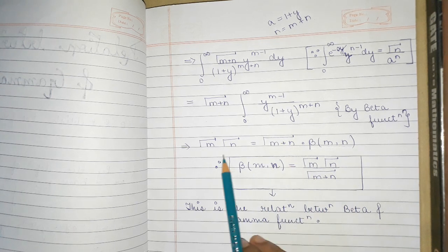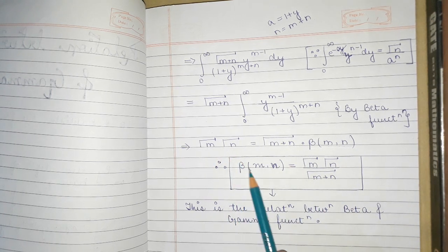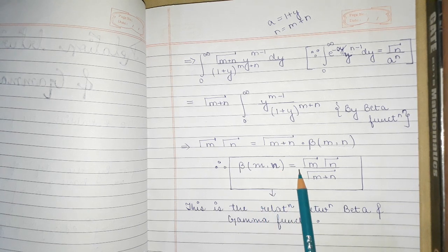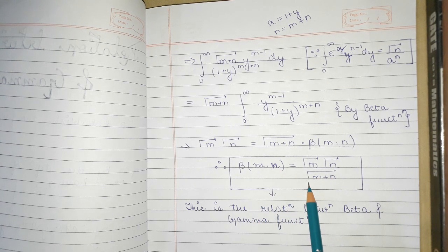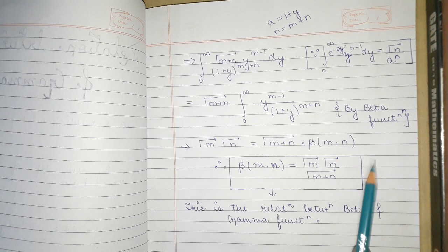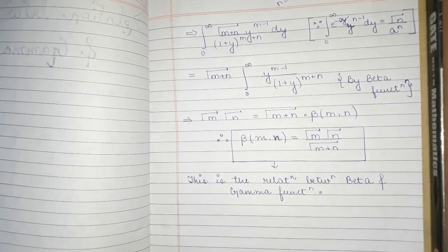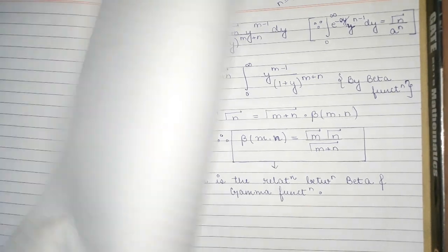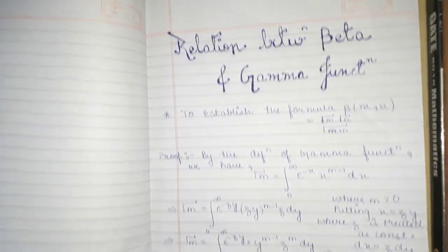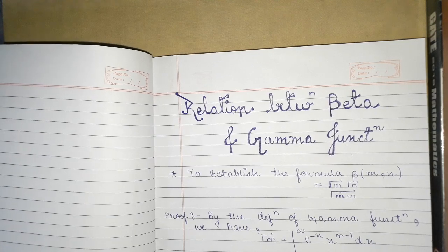Rearranging this, Beta(m,n) is equal to Gamma(m) times Gamma(n) divided by Gamma(m+n), which is the relation between the Beta and Gamma functions. So we have derived the relation between the Beta and Gamma functions. Take care.